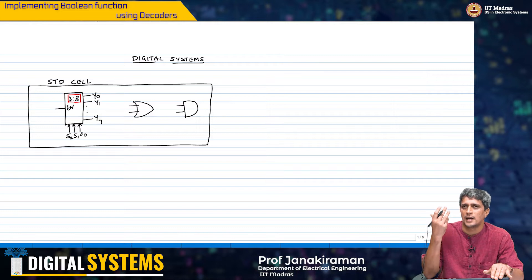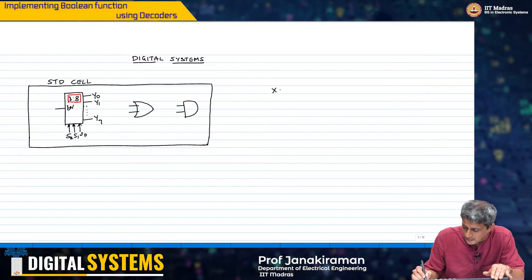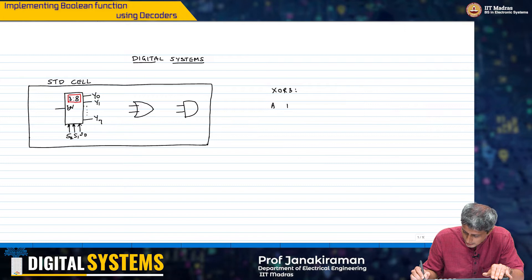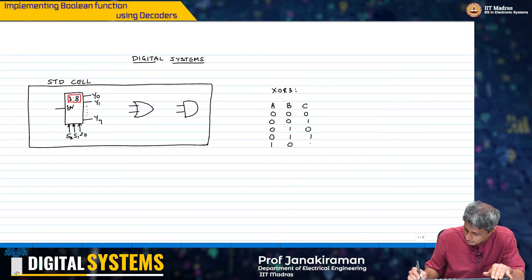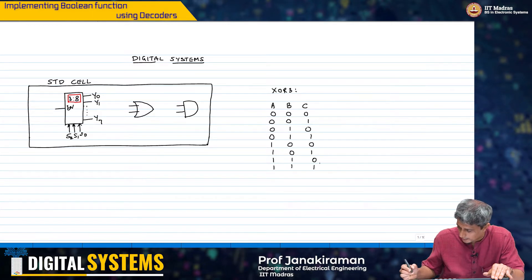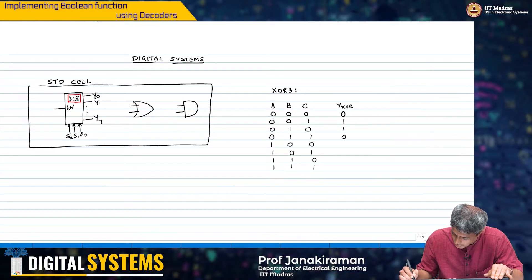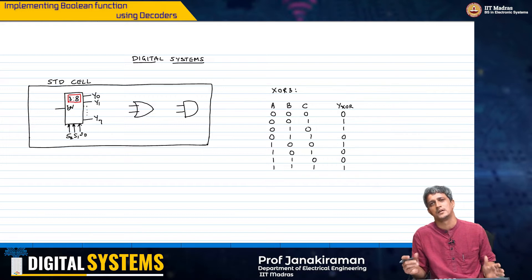Let us start by looking at a very elementary logic gate — an XOR-3 gate. We have inputs A, B, C. The truth table entries are: 000→0, 001→1, 010→1, 011→0 (wait, let me restate): the output Y_XOR is 0,1,1,0,1,0,0,1 — essentially it outputs a 1 if there are an odd number of 1s in the inputs.